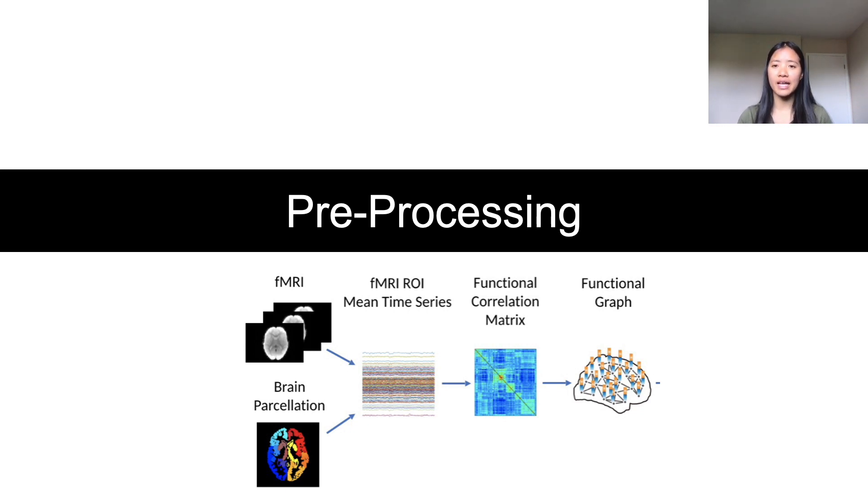Next, the fMRI scans are broken into individual time steps in order to create time series plots that can then be used to build graphs illustrating the functional connectivity between different ROIs. In total, there were approximately 3,000 graphs for each dataset for a total of 6,000 graphs that were used to train the model.